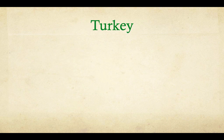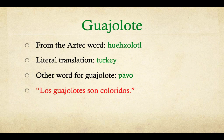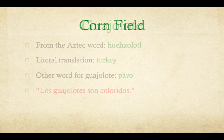Turkey. 'Guajolote.' It comes from the Aztec word 'huajolote' and the translation is turkey. Another word for guajolote is 'pavo.' If you say guajolote in Chile, they might not understand, but you can try — maybe they'll learn something. Example sentence: 'Los guajolotes son coloridos.'